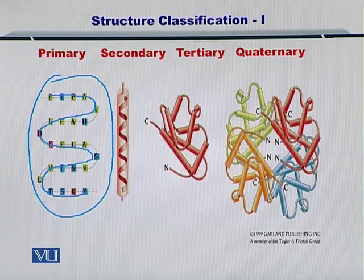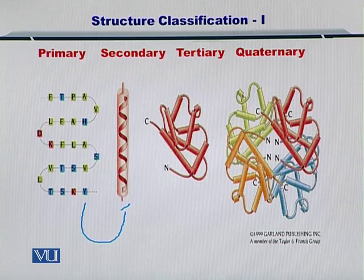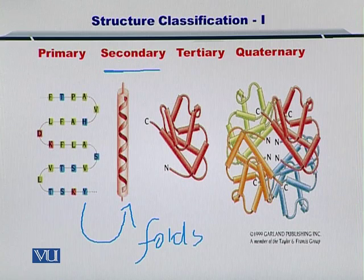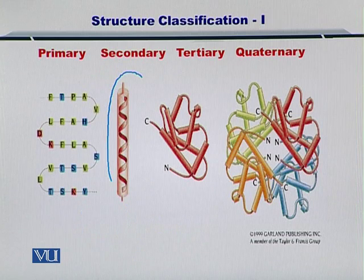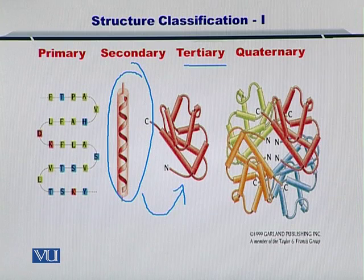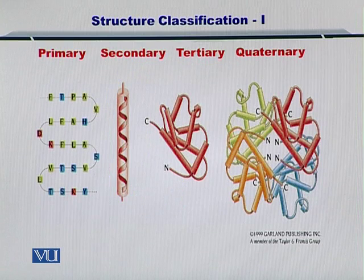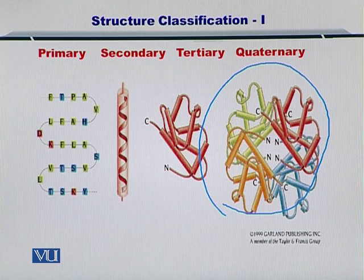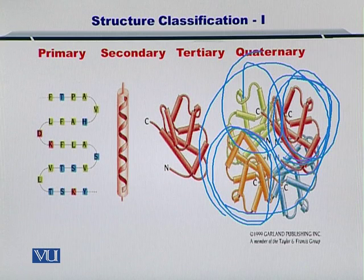So once this chain is formed, the chain folds and takes the shape of secondary structures. The secondary structures include alpha helices, beta sheets, and so on. Once you have the alpha helices or beta sheets, these secondary structures combine together to create more complex tertiary structures. Tertiary structures are essentially the complete structures for every protein. However, several proteins may interact together and form quaternary structures, where several tertiary structures have come together.